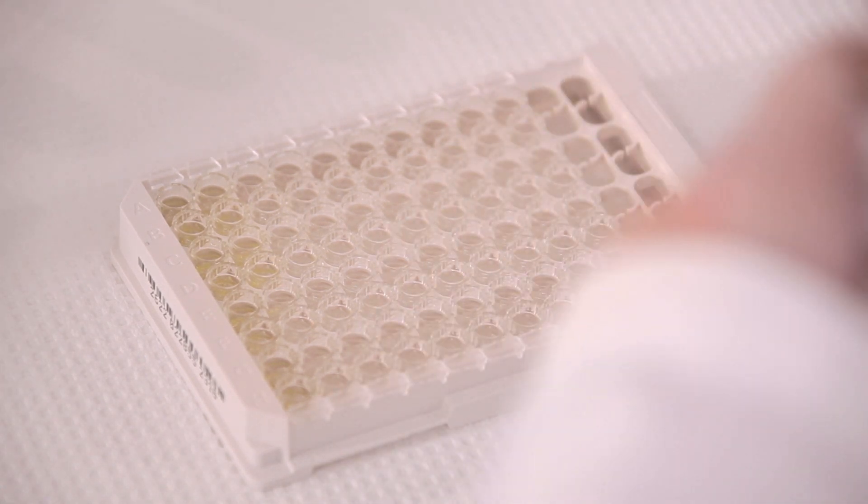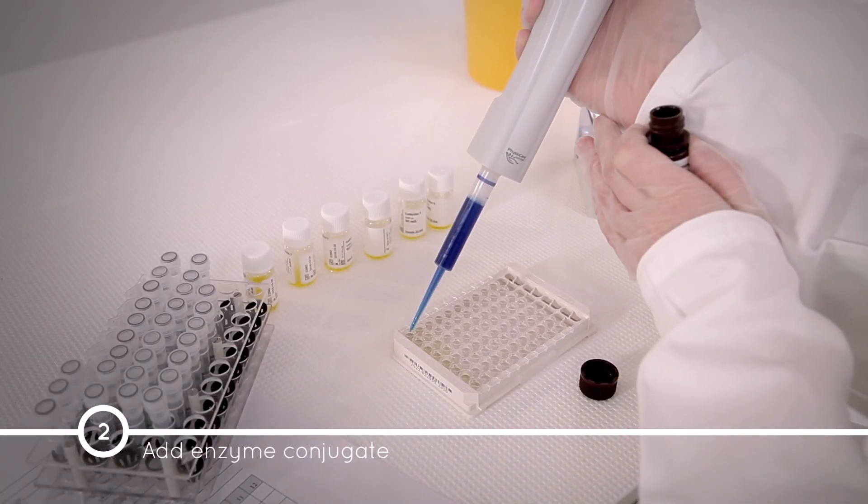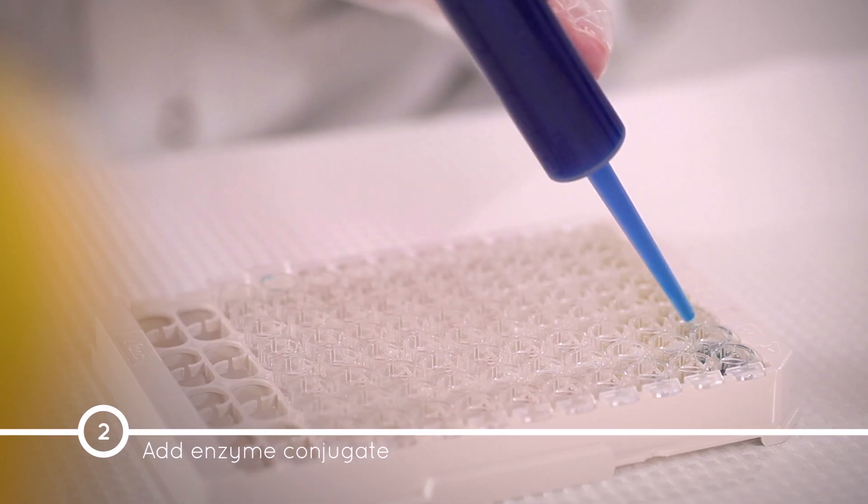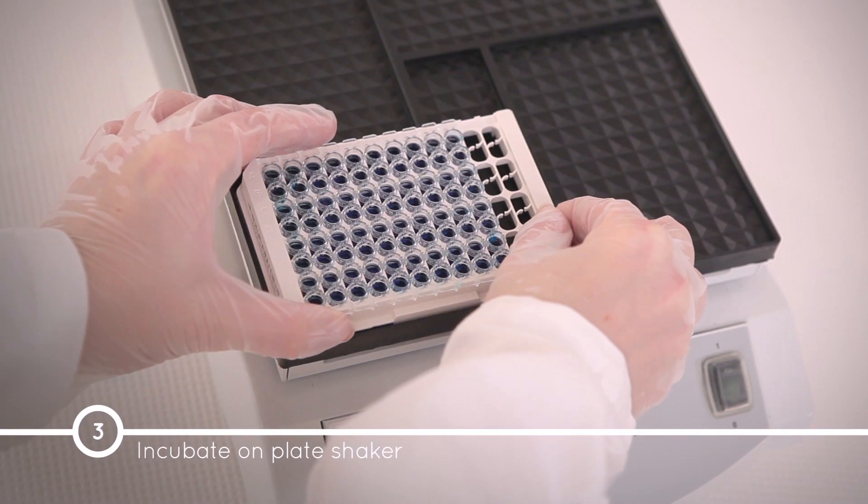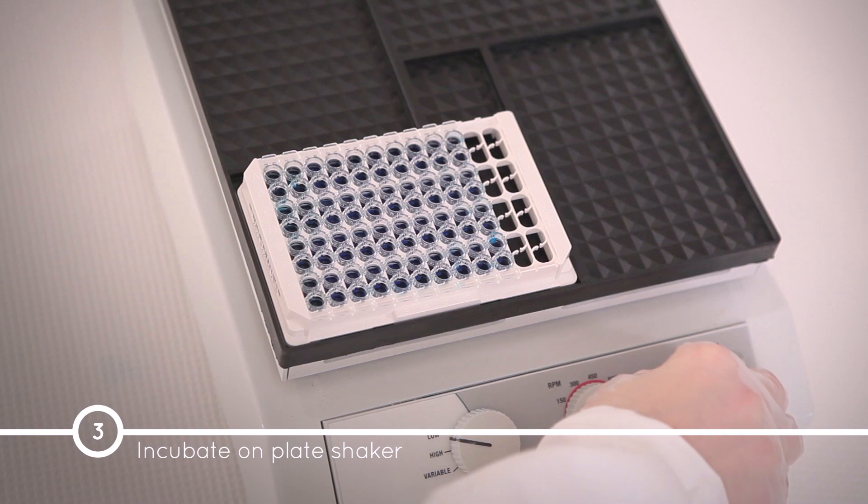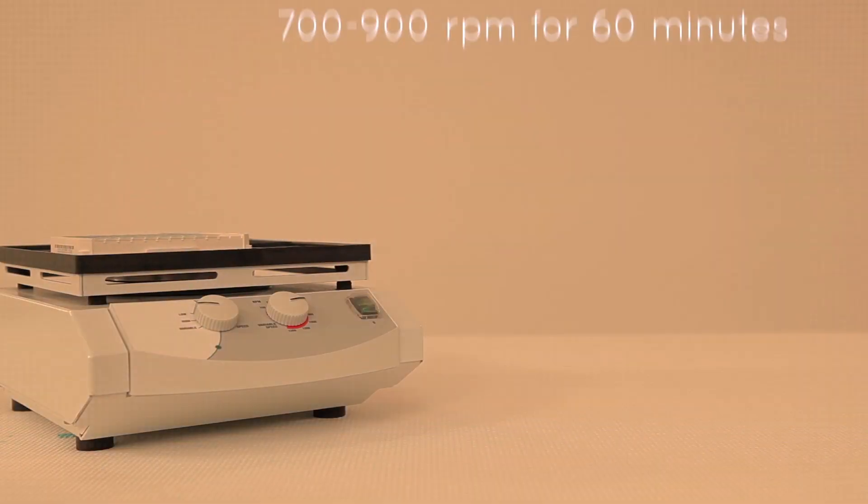The samples and controls are colorless. Now, add 100 microliters of Enzyme Conjugate 1X solution into each well and incubate on a plate shaker with orbital movement set to 700 to 900 RPMs for 60 minutes.